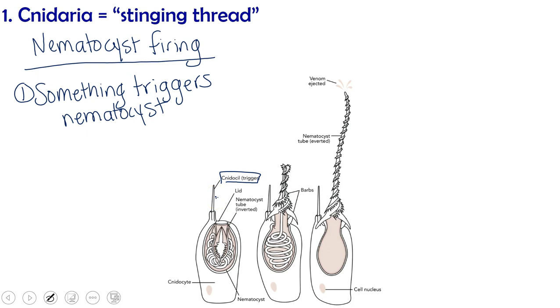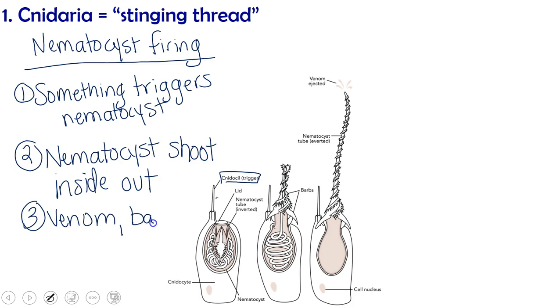So something triggers the nematocyst. The nematocyst is actually, when it's inside the cell, it's inside out. An osmotic pressure causes the nematocyst to shoot inside out really fast, like within milliseconds. As it shoots inside out, the venom and the barbs or hooks go into the victim.